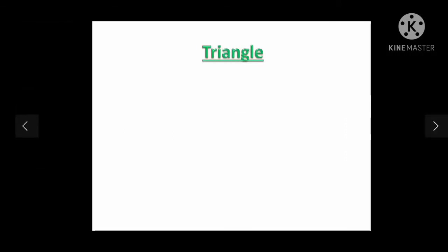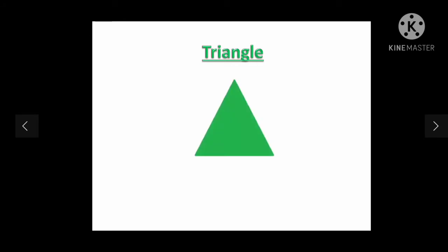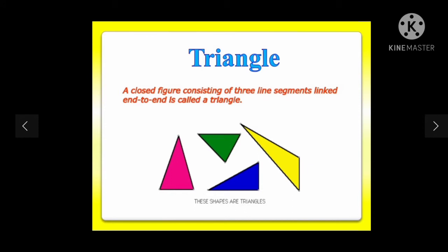Today, in this session we are going to learn about the topic triangle and their properties. Understood? What we are going to learn today? So, this is a triangle. What is a triangle? Triangle is a three-sided figure formed by the combination of three same or different angles. Now, when we join three segments of any measurement we can form a triangle. So, it can be any measurement, any size. See, this is a triangle.